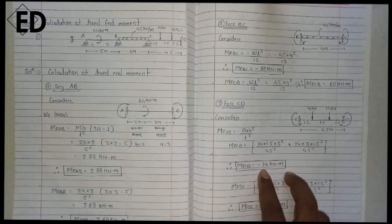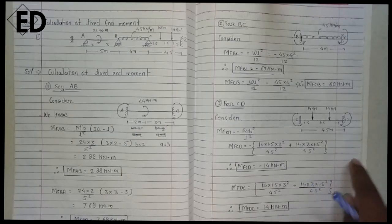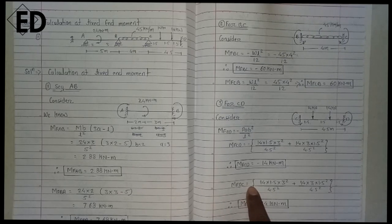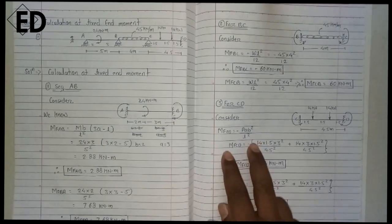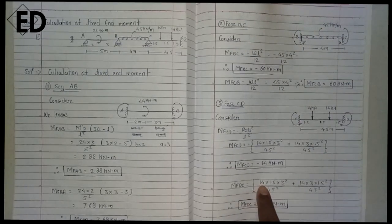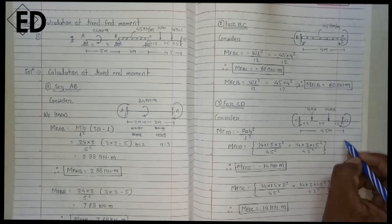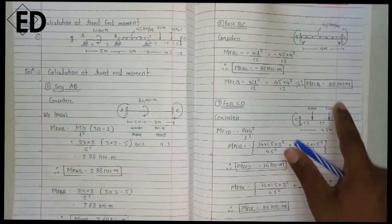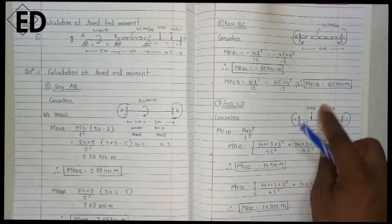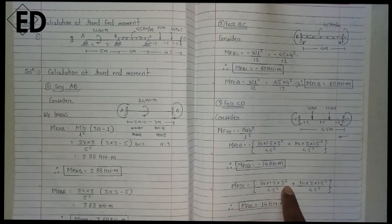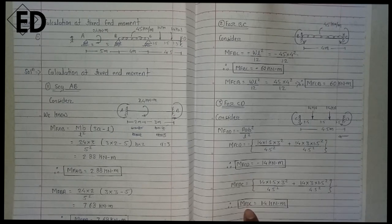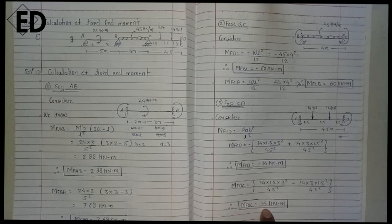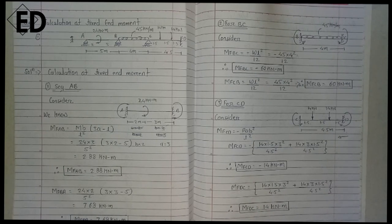So here M-FCB is minus 14 kilonewton meters. A similar procedure is used for calculating the fixed end moment from D to C. Here we are not taking a negative sign because the moment is in the clockwise direction. Using the formula P times A times B squared divided by L squared for each load separately, where for the second load A is 1.5 and B is 3. Directly putting these values into the calculator, the fixed end moment from D to C is positive 14 kilonewton meters.